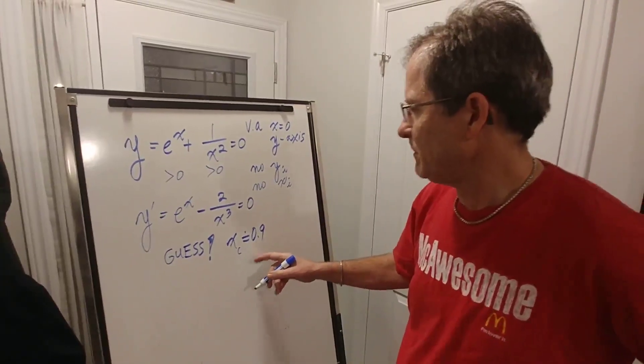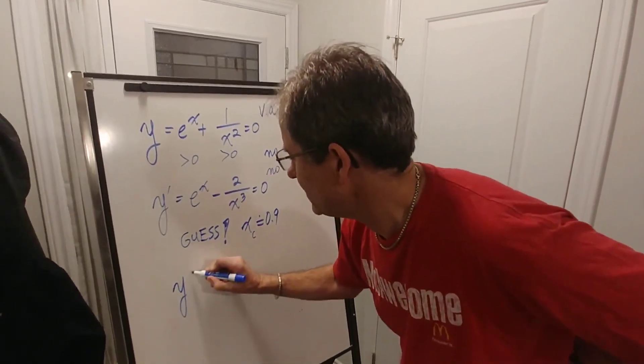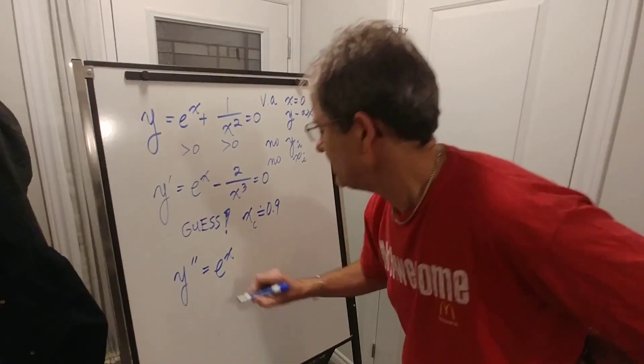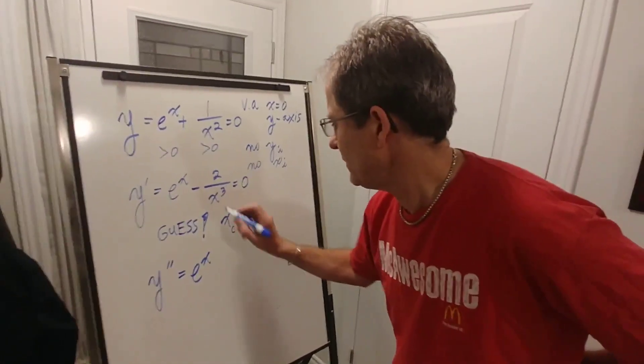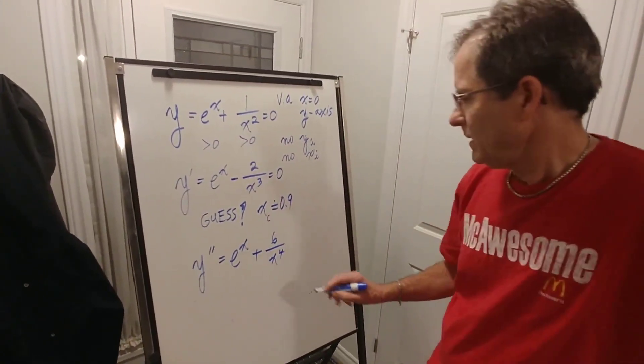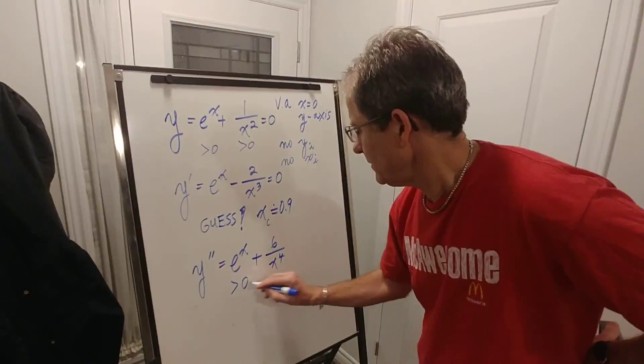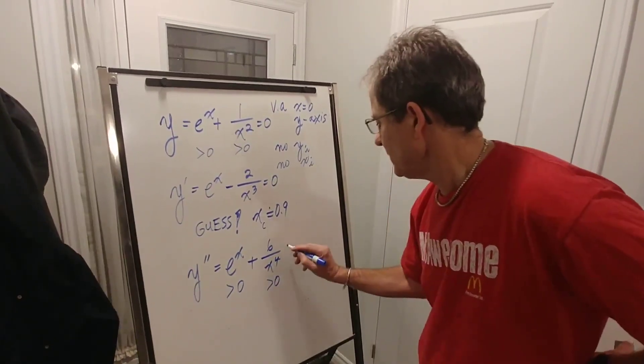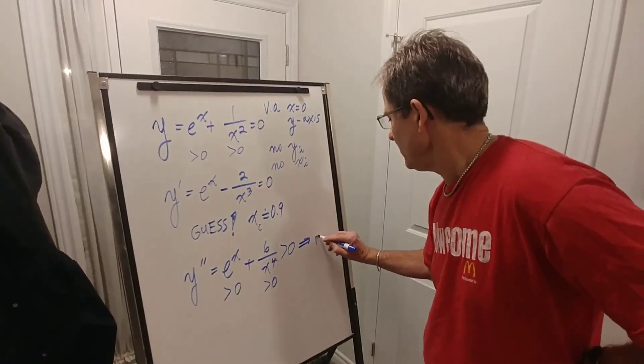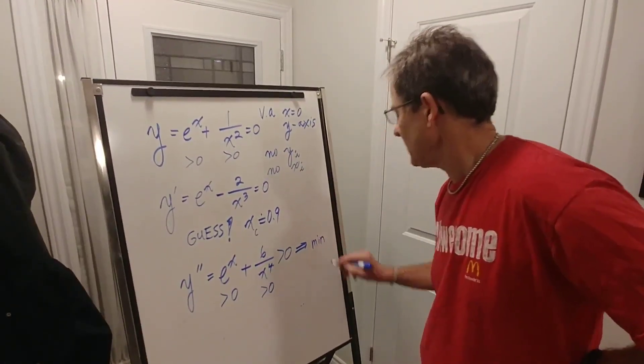And if I want to find out if it's a maximum or minimum, I've got to take the second derivative. Derivative of e to the x is again, the same stinking thing. And the derivative of that is 6 over x to the 4. This is always positive again. This is always positive. So this is positive, and that implies that that max or min is actually a minimum.